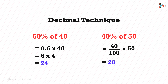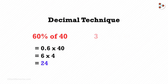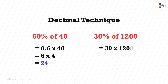Another trick that can be used here is called the remove two zeros trick. We remove the two zeros and multiply 6 with 4 to get 24. Similarly, in the first problem, we get 4 times 5, which is 20. So if you have to find 30% of 1200, then we remove the two zeros and get 30 times 12, which is 360.